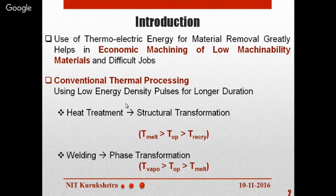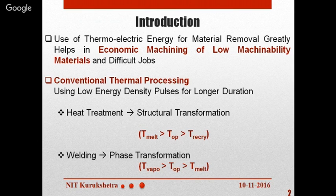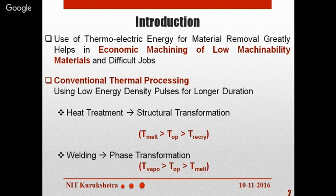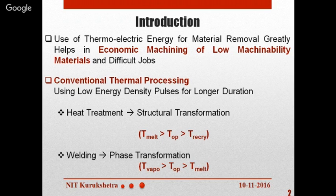Machining processes are classified into three types: conventional or traditional, advanced, and hybrid. Thermal type manufacturing processes can be classified into two groups: conventional and advanced. Conventional thermal processing is characterized by low energy density processes used for longer duration — for example, heat treatment — used for structural transformation. The working temperature in heat treatment is between the melting temperature of the workpiece and the recrystallization temperature.